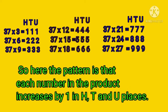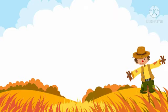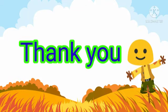In 37×3, the product is 111. In 37×6, the product is 222 — so it increases by 1 in the hundreds, tens, and unit places. I hope you have understood this chapter. Thank you.